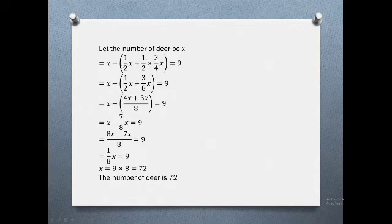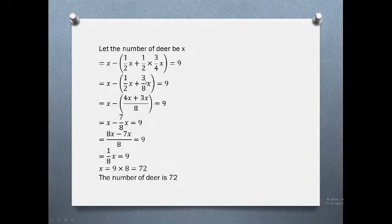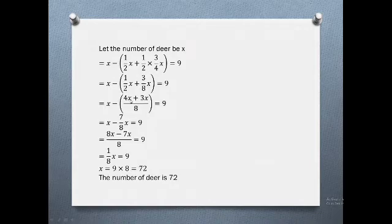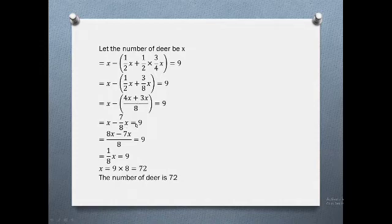We have the equation: 3 by 4x minus 9, then x minus 1 by 2x. So 1 by 2x plus 3 by 8x equals 9 minus x. The LCM is 8, giving us 4x plus 3x equals 9 bracket x minus something.